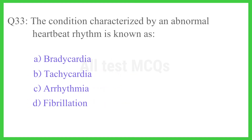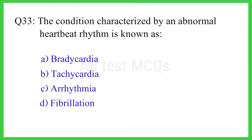Q33. The condition characterized by an abnormal heartbeat rhythm is known as? The right answer is option C. Arrhythmia.